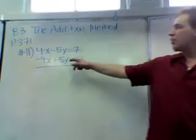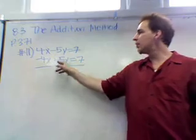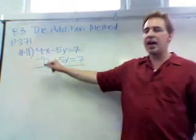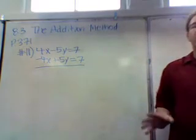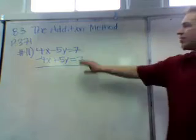The addition method. Page 371, number 11. 4x minus 5y equals 7, and minus 4x plus 5y equals 7. Guess what? You notice this is an opposite to that, and that happens to be opposite to that. So it's obvious the addition method is the way to go here, because the opposites are going to cancel out.